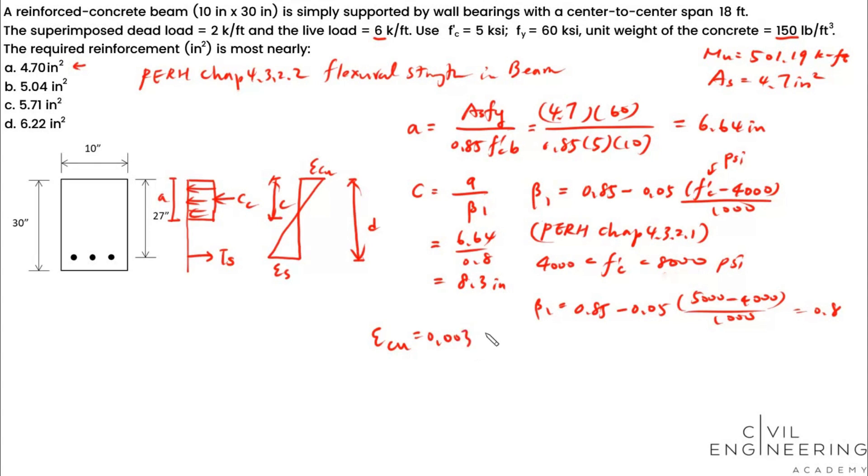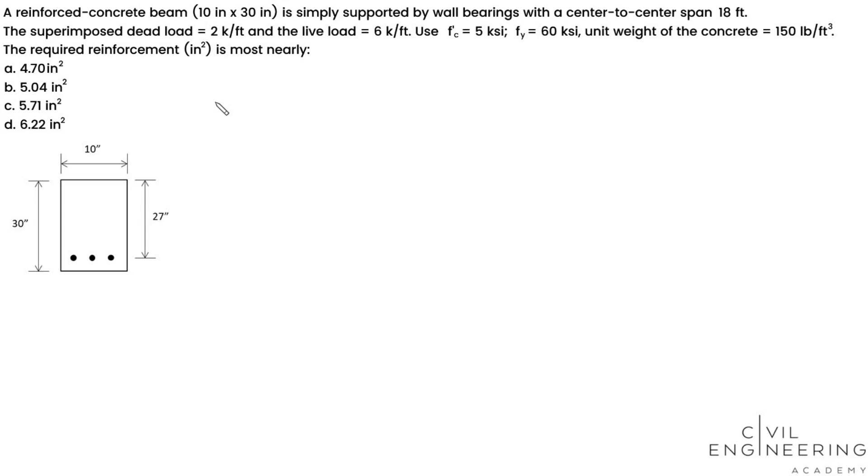We have 5000 psi, so beta-1 equals 0.85 minus 0.05 times 5000 minus 4000 divided by 1000, that's 0.8. So your c equals 6.64 divided by 0.8, that's going to be 8.3 inches. Now we consider that the concrete is at its ultimate strain which is 0.003. So your strain at steel will be d minus c over c times the strain of the concrete. That's going to be 27 minus 8.3 divided by 8.3 times 0.003. You should be getting 0.0068, and this is larger than 0.005, so our assumption of having a tension control section is fulfilled. So the answer should be A.